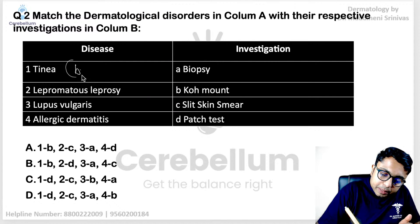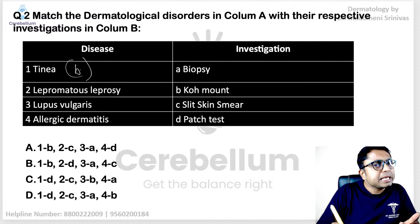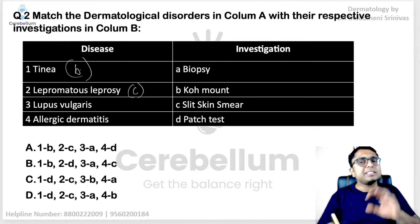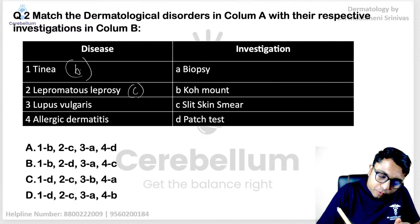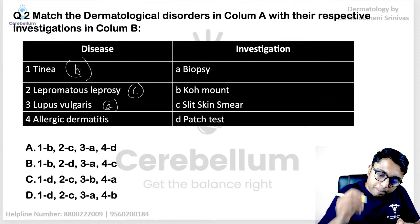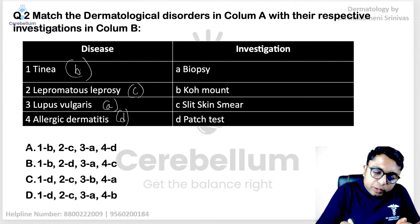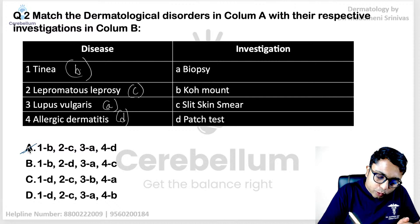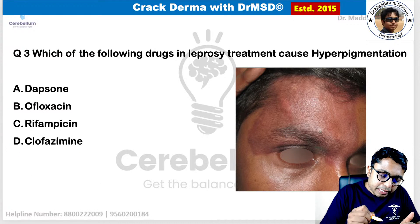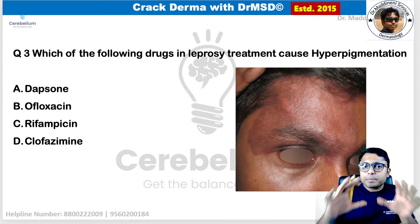For lepromatous leprosy, we can do a biopsy or a slit skin smear — select the slit skin smear here. For lupus vulgaris, which is cutaneous tuberculosis, we perform a biopsy. For allergic contact dermatitis, the investigation of choice is the patch test. So the answer sequence is B, C, A, D — please confirm in the comments if this was the actual question asked.